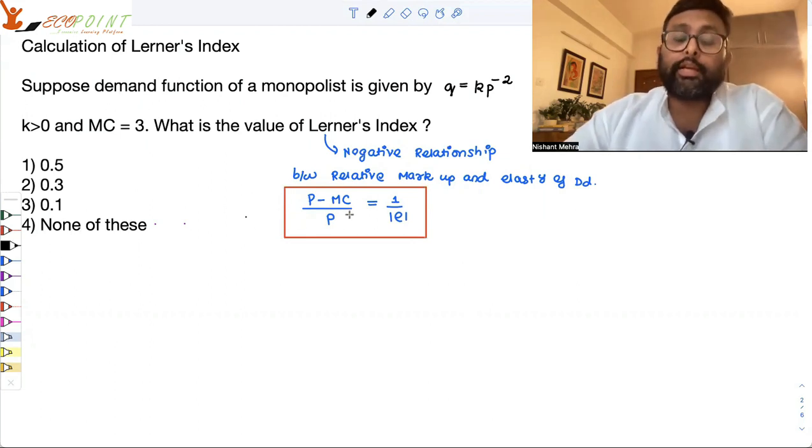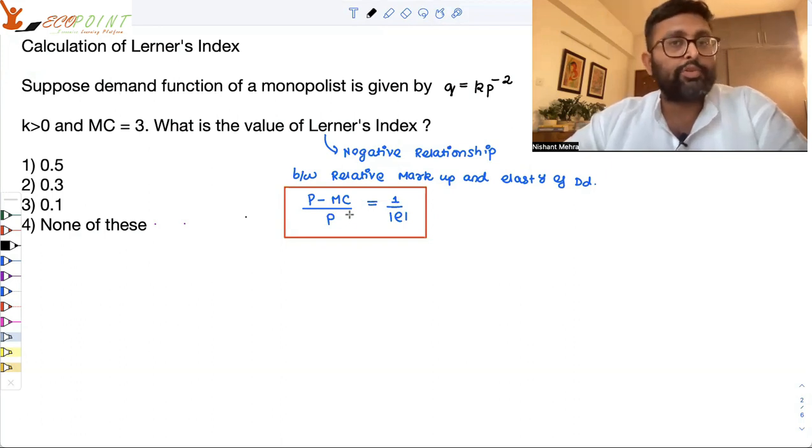Iska kya matlab hota hai? Maan lijiye agar elasticity of demand jada hai. Kisi product ki kisi market mein agar elasticity of demand jada hai, toh iska matlab yeh uske bahut substitutes available hai. So if more substitutes are available, then monopolist does not have that much power to set the price above the marginal cost. You'll be setting the price not too way above.